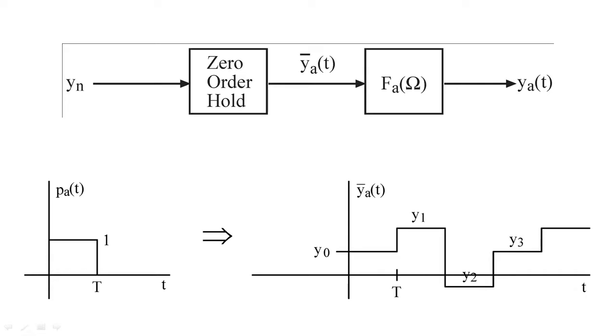This system is called the zero-order hold. The zero-order hold system simply filters y of n with the filter p sub a to create a stepwise approximation of y sub a. This stepwise function would need to be smoothed by a filter f sub a to create y sub a of t.